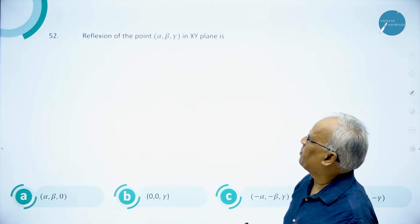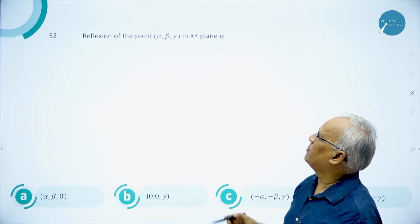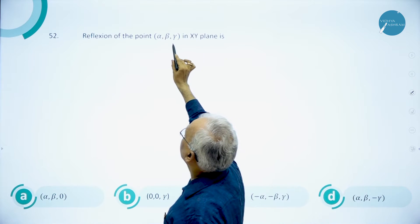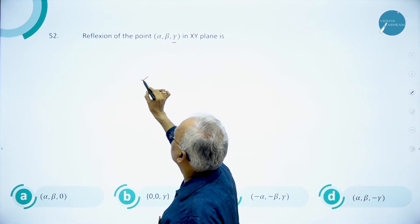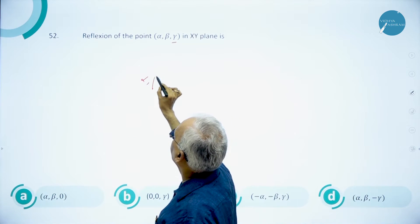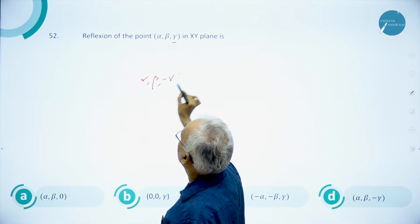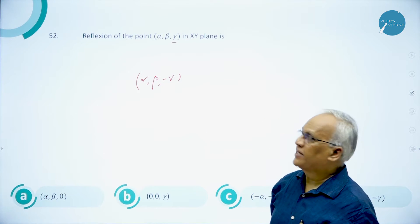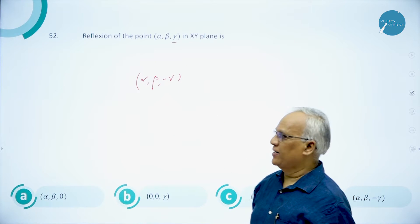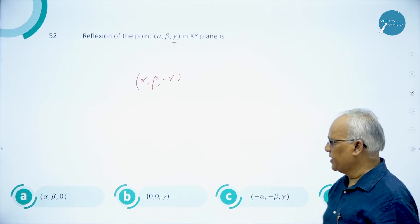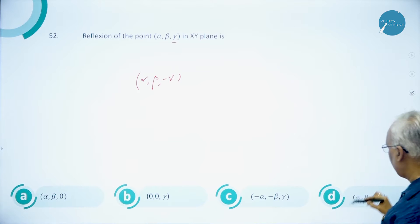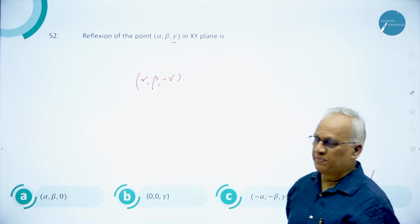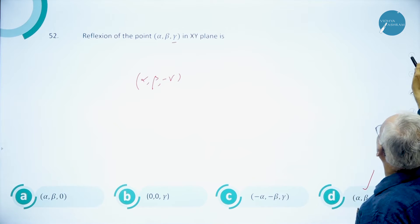Question 52: reflection of the point (α, β, γ) in the xy-plane. In the xy-plane, you change the sign of the z-coordinate, giving (α, β, -γ). Answer is D. This is a very simple, straightforward question.